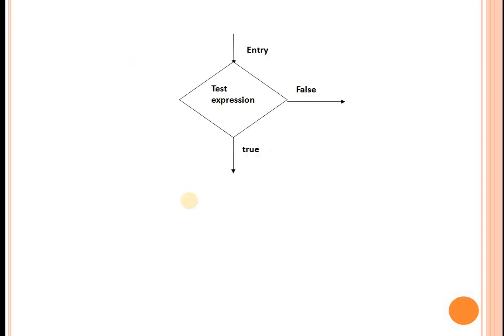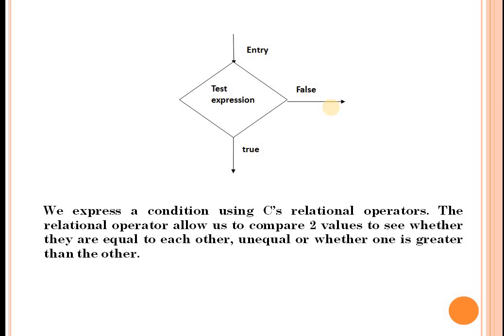Here is a pictorial representation of a simple if statement. In the decision box we give the condition to be evaluated. If the condition is true, we follow the true part — for simple if, there is no false part. We express a condition using C's relational operators, which allow us to compare two values to see whether they are equal, unequal, or whether one is greater than the other. We can use relational expressions like: x equal to y, x less than y, or x less than or equal to y.